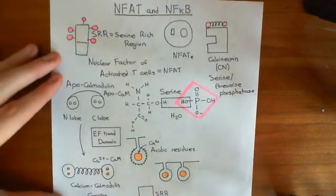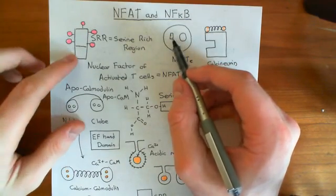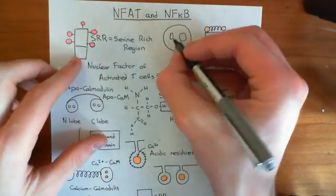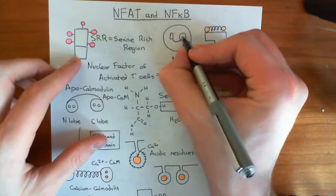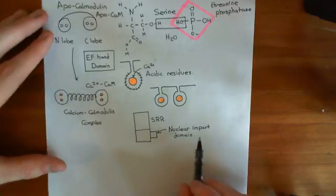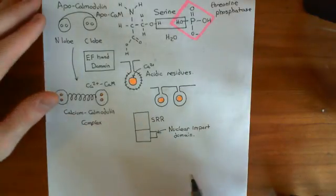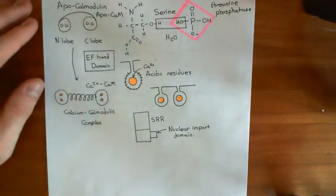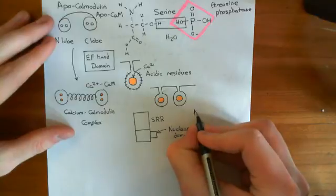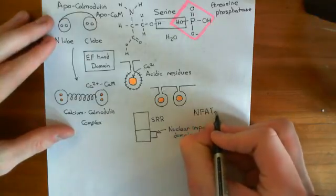Once you've removed these phosphate groups from the nuclear factor of activated T-cells' serine-rich region, it's going to translocate into the nucleus, because it now has this available, exposed nuclear import domain. Once the nuclear factor of activated T-cells is in the nucleus, it's denoted NFAT with a little 'n' at the bottom to denote that it's now in the nucleus.